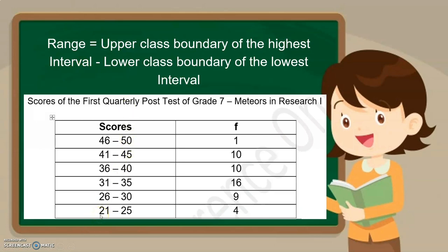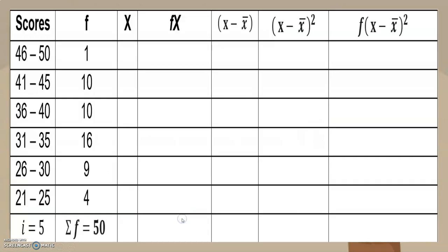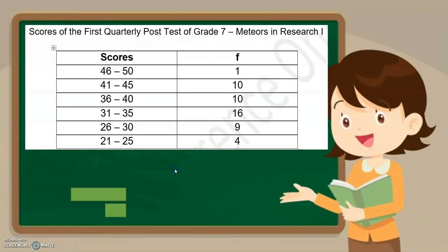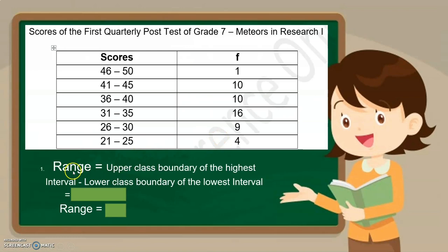How about the lower class boundary of the lowest interval? 21 to 25 — ano yung lower class nyan? Yung lowest interval nyan that is 21. So, ano ba yung lower class boundary ng 21? And that is 20.5. So this is the table that we're going to use in computing for the other measures of variability. So, we have here 50.5 — the upper class boundary of the highest interval — and the lower class boundary of the lowest interval is 20.5. So we have 30. The range for this is 30.